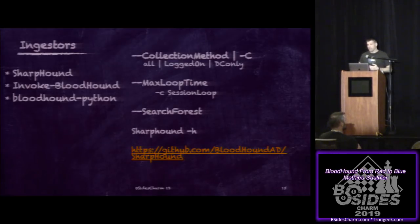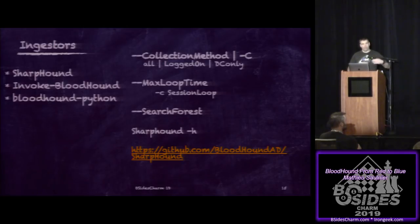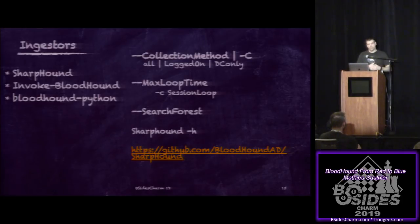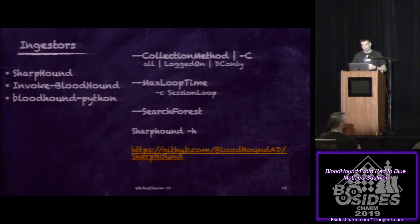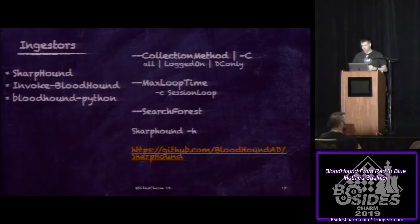A very interesting switch is max loop time, which works with the session loop collection. By default, BloodHound tries to get sessions for two hours. As a defender, you'll want to extend that timeframe because some admin tasks are done only at night. Running it for 24 hours or more, or even over a weekend, helps capture all session data. There's also a search-forest switch if you have more than one forest. For other switches, use SharpHound's help flag or check the source code.